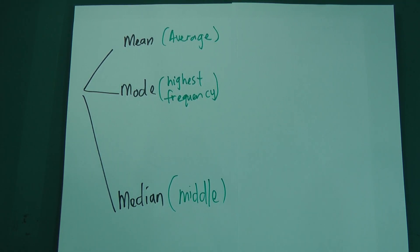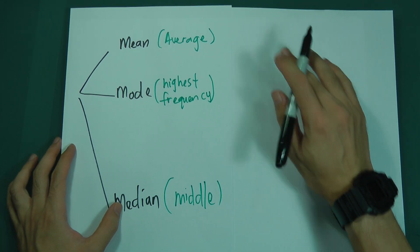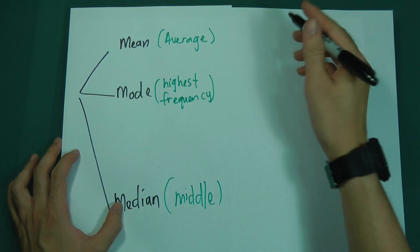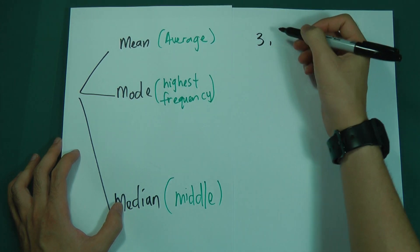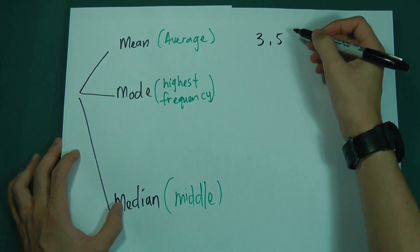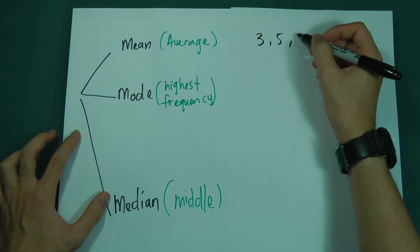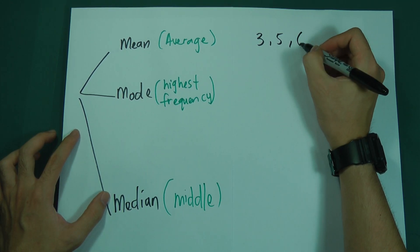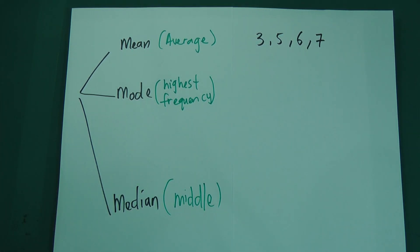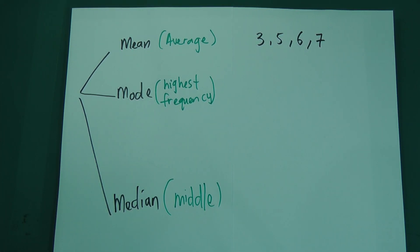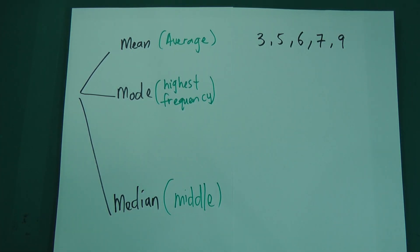Let me give some easy examples. I'll use ungrouped data first. Let's say we have the numbers: 3, 5, 5, 6, 7, 9, and we add a couple more numbers to make the data easier to work with.